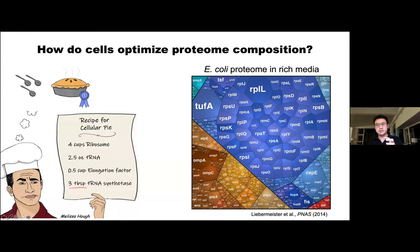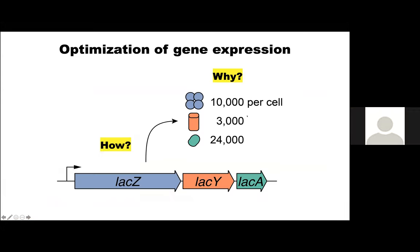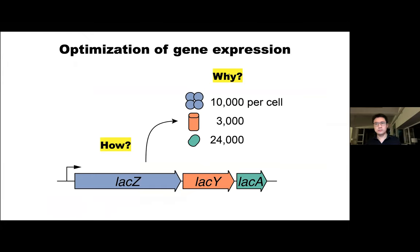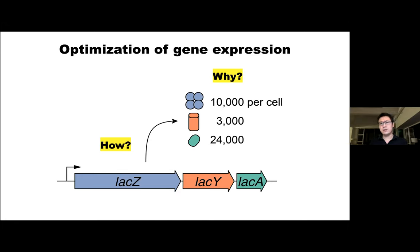My lab is very interested in understanding this problem. Luckily, this optimization problem is something that evolution has solved over and over again, and the solution is encoded in the regulatory genome, which we can now begin to uncover. We and many others have been working to decipher both why and how cells optimize gene expression. For example, the lac operon produces three times more beta-galactosidase (lacZ) than the lactose permease (lacY). Why these numbers? I believe that if we're to truly understand biology mechanistically, we must aim to derive why cells need these enzyme ratios given biochemical properties like Kcat or Km.